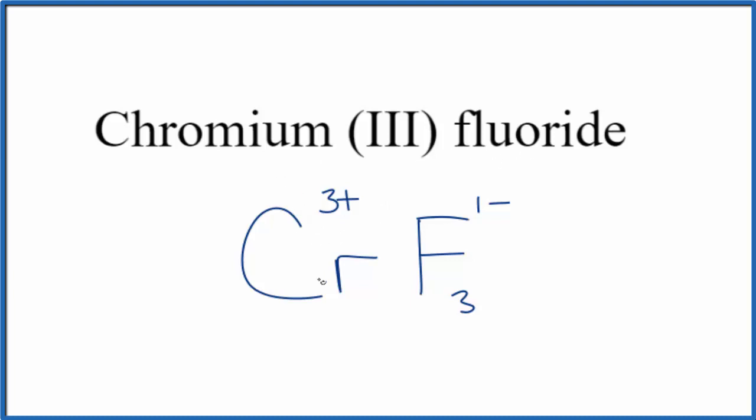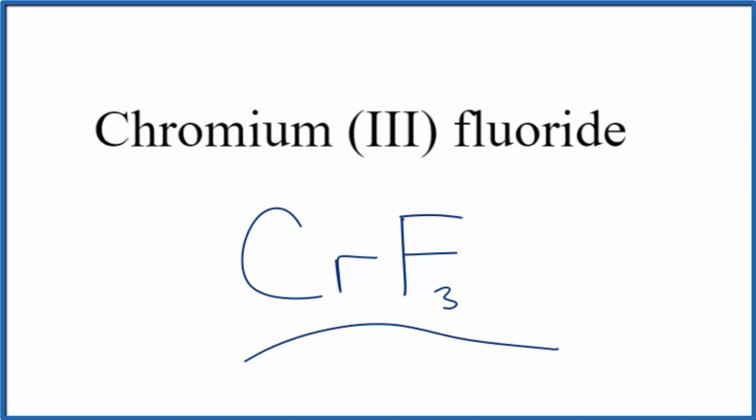So the formula for chromium (III) fluoride is CrF₃. Let's remove these symbols here, and there you have it - the formula for chromium (III) fluoride, CrF₃. This is Dr. B, and thanks for watching.